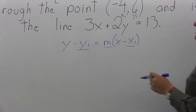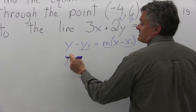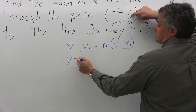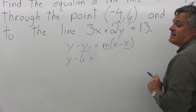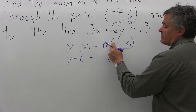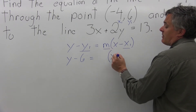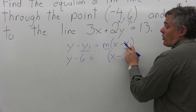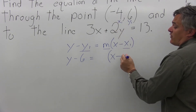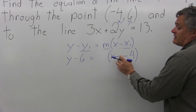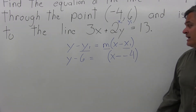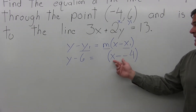So we have most of the answer right now. The y can stay, the minus stays. Y1's value is 6, so I put in a 6. Equals m — that's the part I don't have yet, that's for slope, so I'll leave a space. Then the parentheses, x, minus, and x1 is negative 4. Pay attention to the negatives — there are two negatives, one from the formula and one from the point's negative x coordinate. This will simplify later to x plus 4.